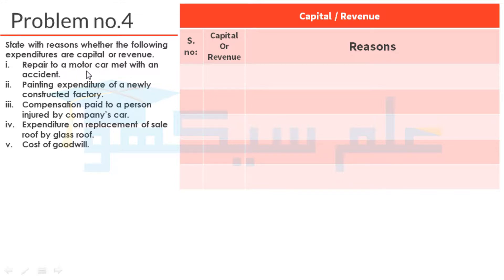The five expenditure items are: first, Repair to a Motor Car Met with an Accident; second, Painting Expenditure of a Newly Constructed Factory; third, Compensation paid to a person injured by a company's car; fourth, Expenditure on Replacement of Slate Roof by Glass Roof; and fifth, Cost of Goodwill.